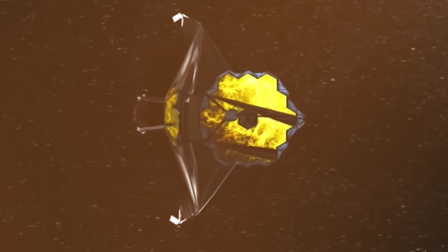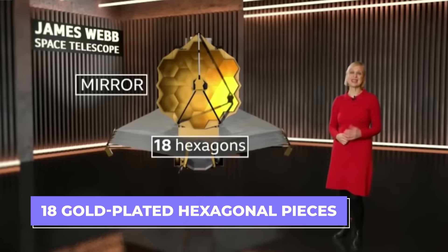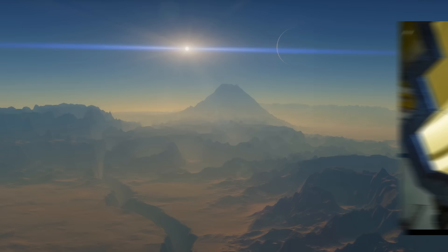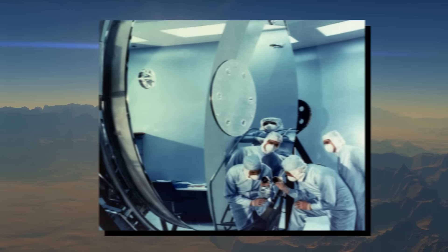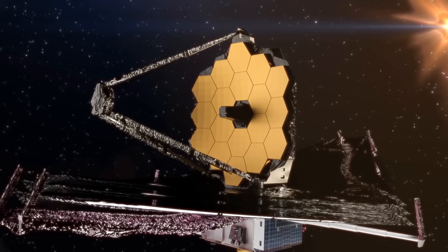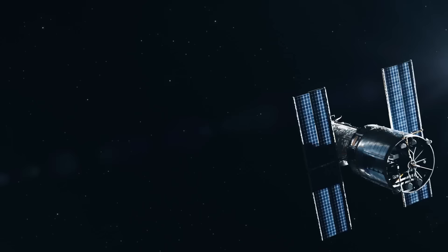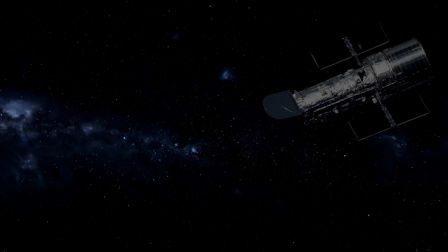Webb's main mirror is made of 18 gold-plated hexagonal pieces. And when they come together, they make a big mirror that's 6.5 meters across. That's much bigger than Hubble's mirror, which is only 2.4 meters. Webb can collect more light, about six times more. Unlike Hubble, which looks at light in the near-ultraviolet visible range and near-infrared.